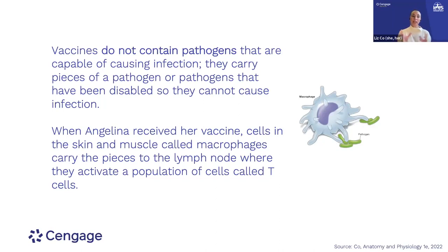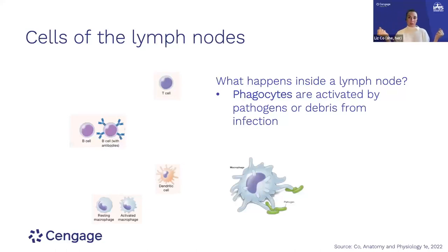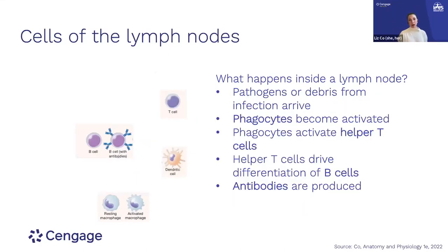When Angelina received her vaccine, cells in the skin and muscle called macrophages will carry pieces of the pathogen to the lymph node, where they activate a population of cells called T cells. Macrophages are a type of cell within the family of phagocytes — cells able to engulf pieces or even whole pathogens. They really tie together the pathogen and the infection to the rest of the immune system. The two types of phagocytes in our lymph nodes are macrophages and dendritic cells.